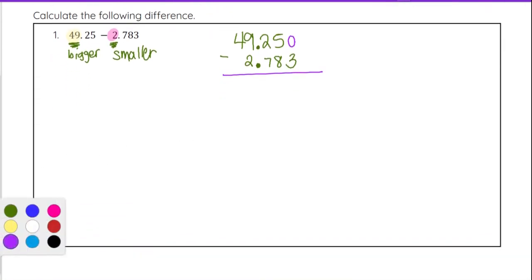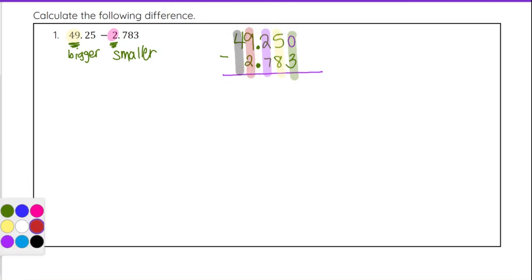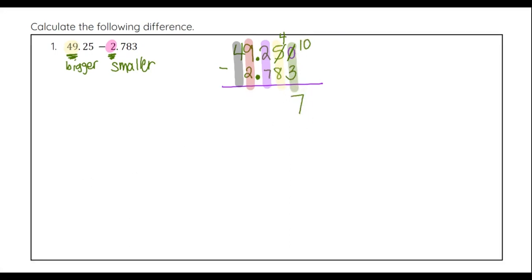Going ahead and subtracting down the columns: 0 and 3, 5 and 8, 2 and 7, 9 and 2, and then 4 on its own. Starting with 0 minus 3 — that's negative, so we borrow to make the 0 a 10, crossing out that 5 and making it a 4. Now 10 minus 3 is 7. Next column: 4 minus 8 is negative, so we cross that 4 out and make it 14, borrowing from the 2 so it drops to a 1. Then 14 minus 8 is 6.